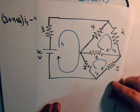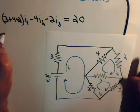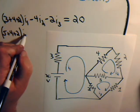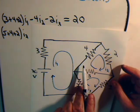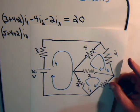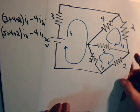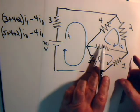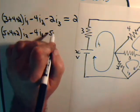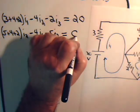In the next loop, current I2 goes through a five, four, and two ohm resistor, giving us (5 + 4 + 2) times I2. Current I1 goes through the four ohm in the opposite direction, so we have minus four times I1. For the five ohm resistor, I3 flows through in the opposite direction, giving us minus five I3. There is no voltage source in this loop, so that equals zero.